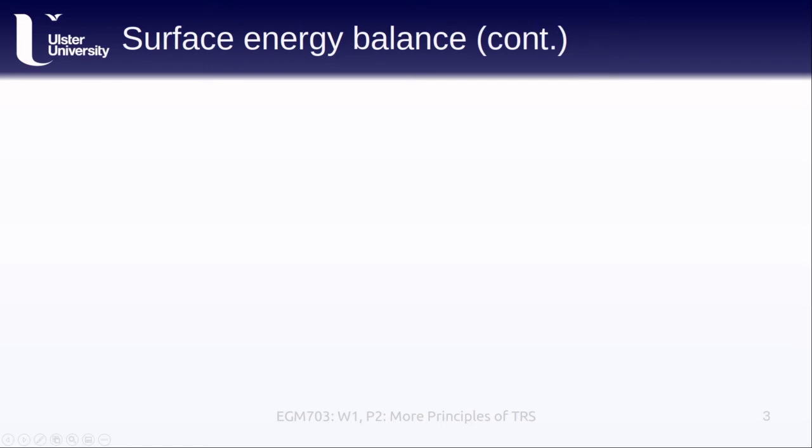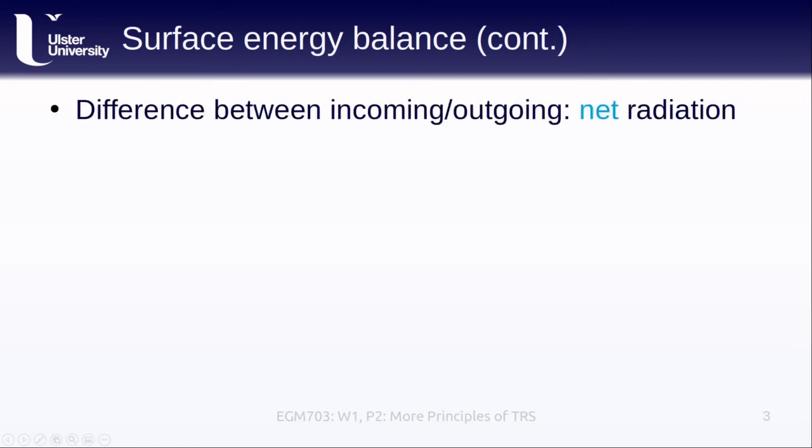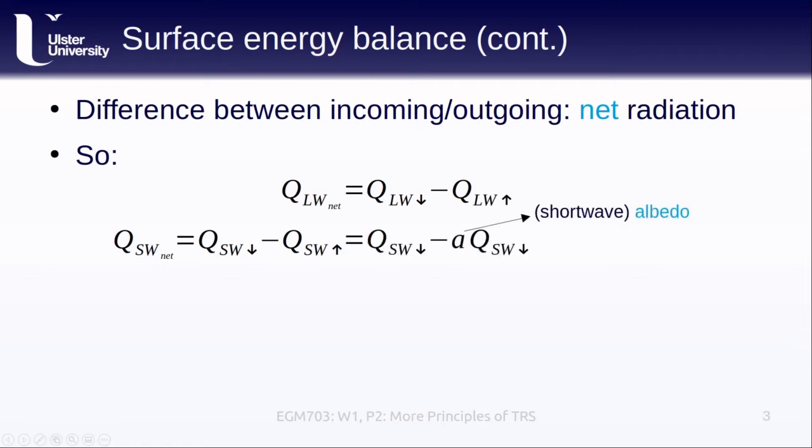We can simplify this expression a bit further. For example, we can define the net radiation as the difference between the incoming and outgoing radiation. For the longwave radiation, that expression looks like this, just the incoming longwave minus the outgoing longwave. And for the shortwave radiation, it looks like this. But if we remember that the Earth's surface doesn't typically emit at shorter wavelengths, we can simplify this further using the shortwave albedo, denoted as the A here, which is just the fraction of the incoming shortwave radiation reflected by the surface.